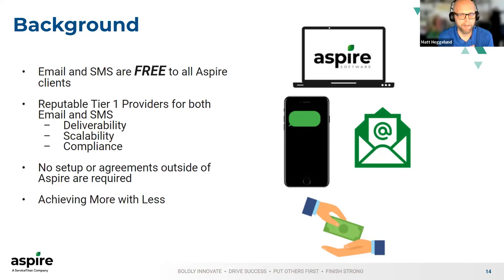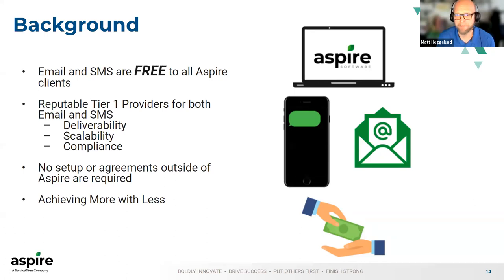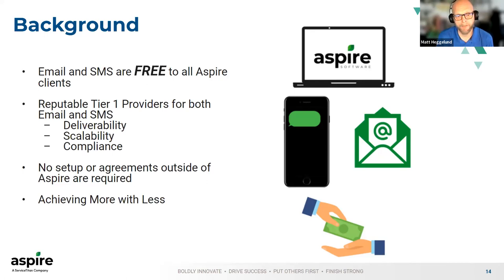Behind the scenes, we chose our providers carefully, wanting to make sure we were focused on deliverability, scalability, and compliance. We chose tier-one, grade-A providers that have very reputable services. They're scalable, they're fully compliant, and they're always rolling out the latest and greatest so we can keep up with the technology and the rapidly changing environment around notifications. No setup or agreements are needed outside of Aspire.